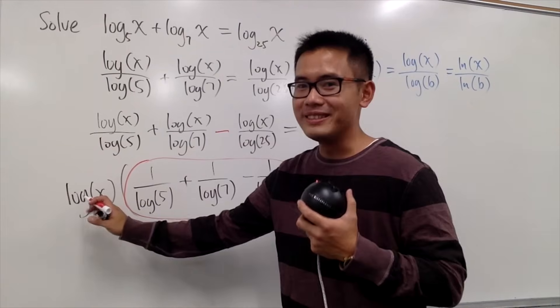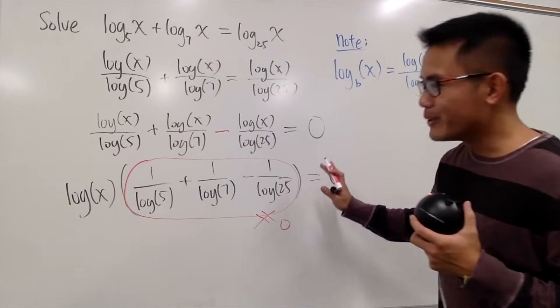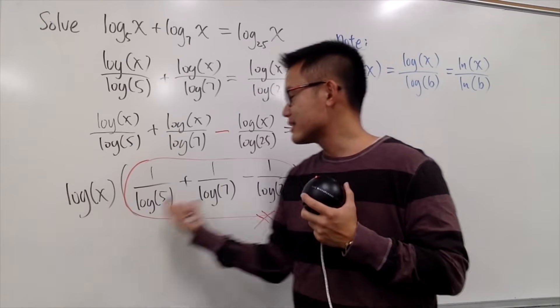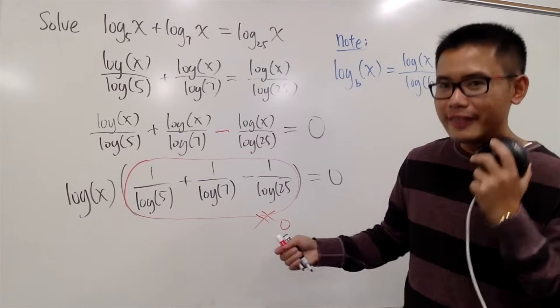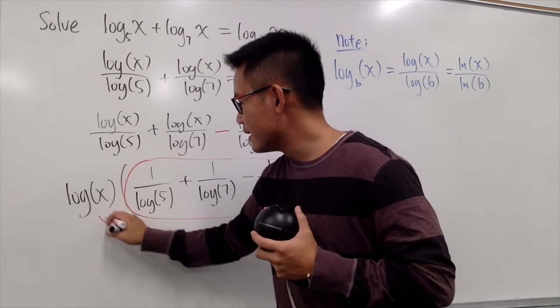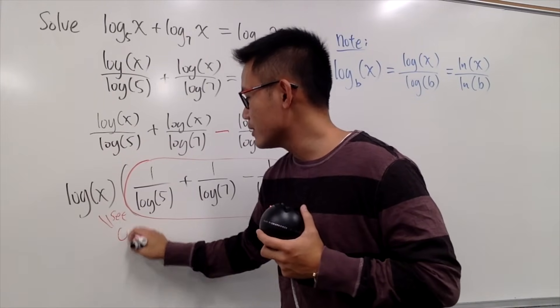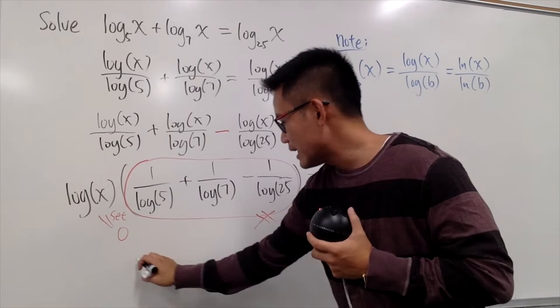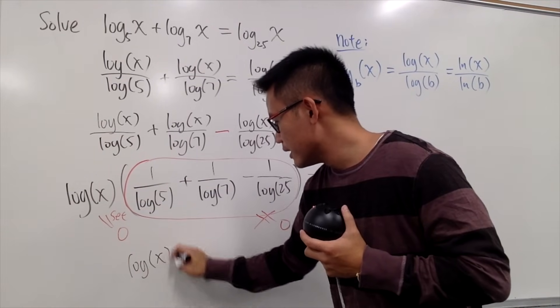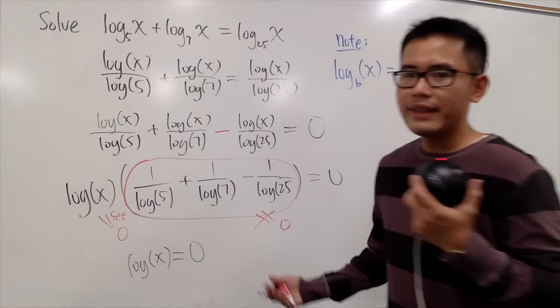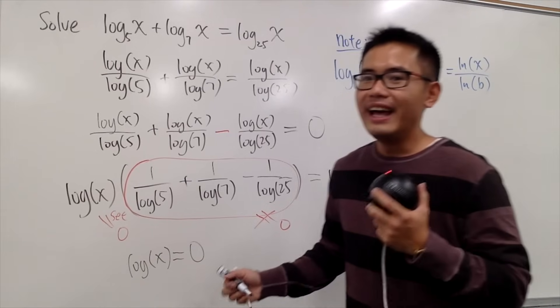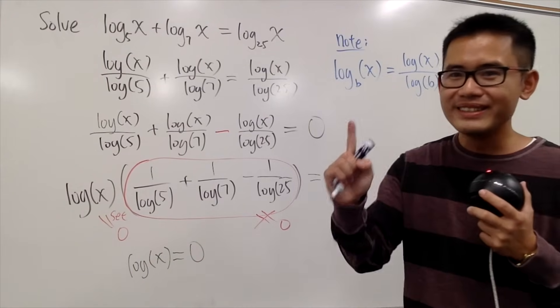So, the only situation to make this equation true, in fact, here is the only place that has the x, right? We have log of x times this non-zero number. That means we must have this equal to 0. So, we have to set log of x equal to 0. So, let's do that right here. We must have log of x equal to 0. And now, you have to ask yourself, log of what would be 0? x has to be what? x has to be 1.